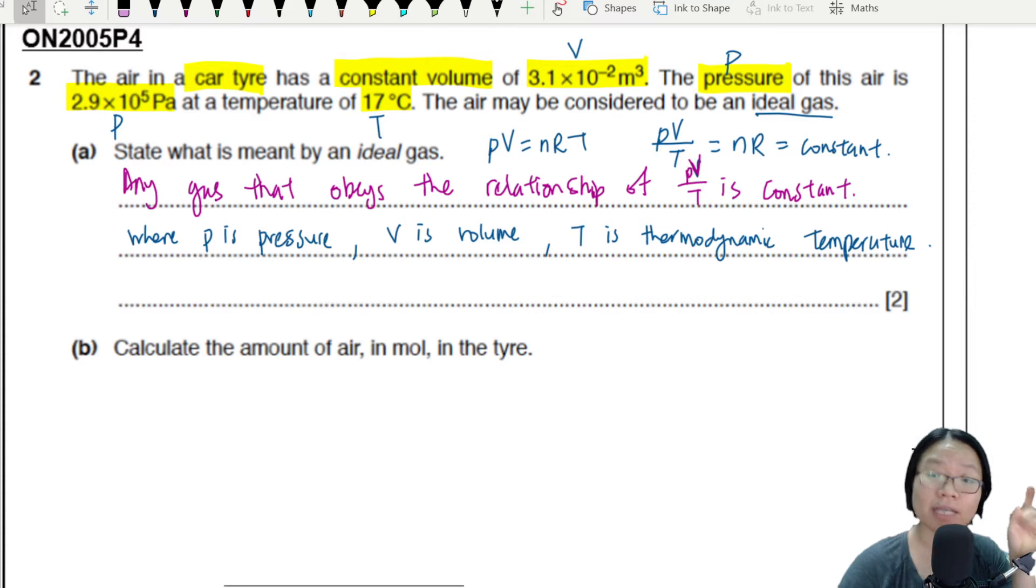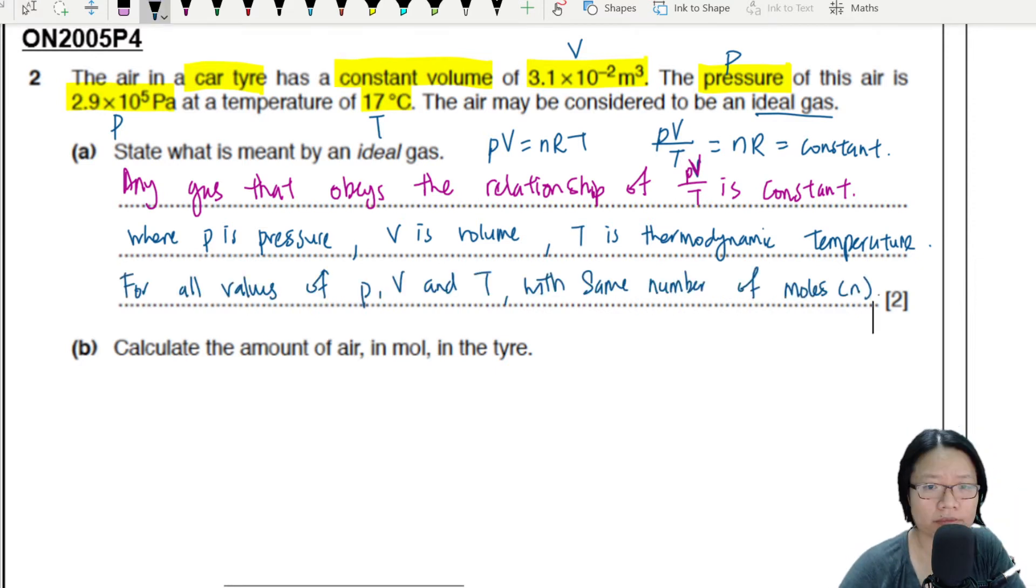So once we define P, V, and T, we should also state the conditions. Okay, so for all values of P, V, and T, provided the number of moles is constant. So you can see here it is for all values of P, V, and T, same number of moles.